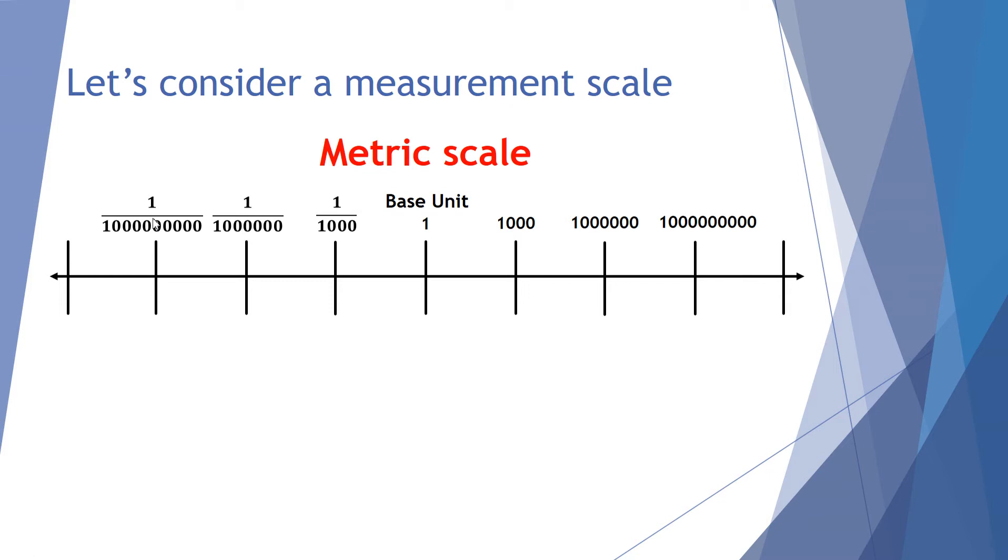However, in everyday measurement, quite often we're interested in other values between one thousandth and a thousand, so we can add these in as well. We have, from one, we get ten times bigger which is ten, ten times bigger that is a hundred, and ten times bigger that is a thousand. One divided by ten is one tenth, divided by ten again is one one hundredth, divided by ten again is one one thousandth. And we're all pretty used to that type of counting on a number line.